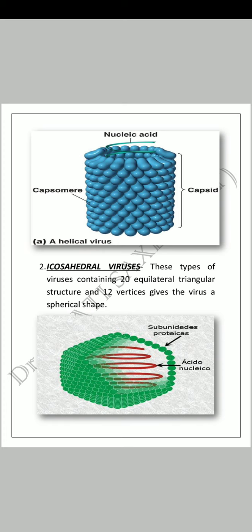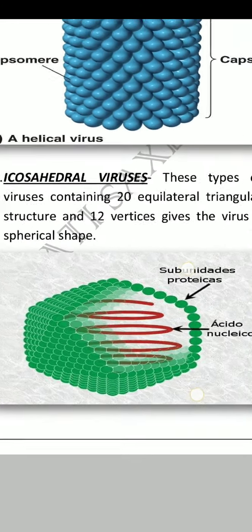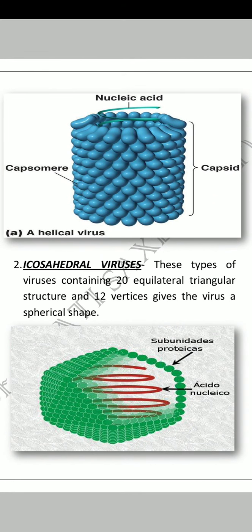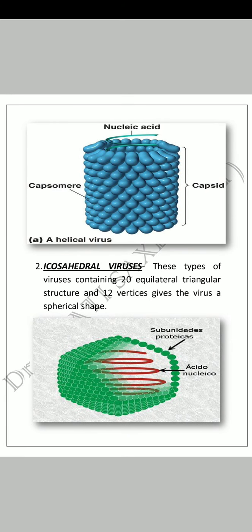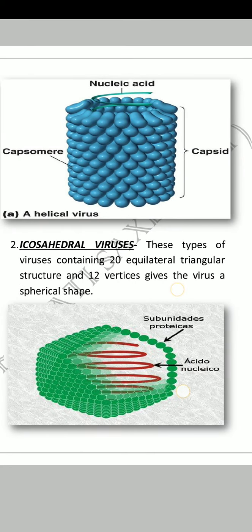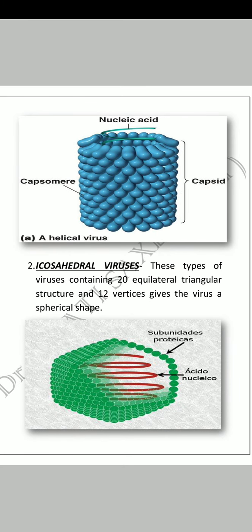These types of viruses contain 20 equilateral triangular structures and 12 vertices, giving the virus a spherical icosahedral shape. اس icosahedral virus میں، جیسا کہ diagram میں آپ دیکھ رہے ہیں، nucleic acid اندر ہے اور باہر capsid یا capsomere ہے۔